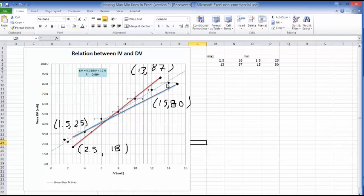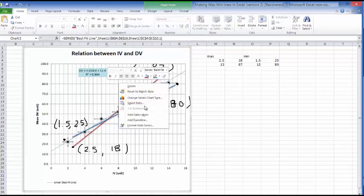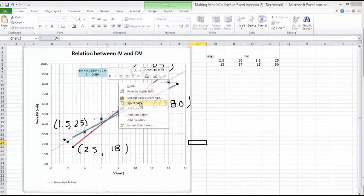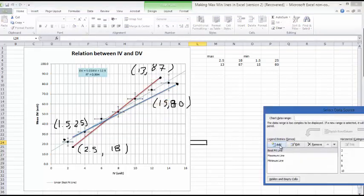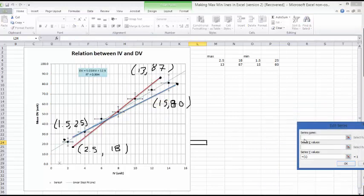So what we're going to do is right click on a data point, go to select data. Now we're going to add the data for the minimum and maximum points.